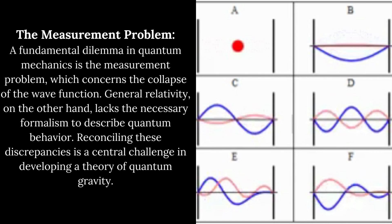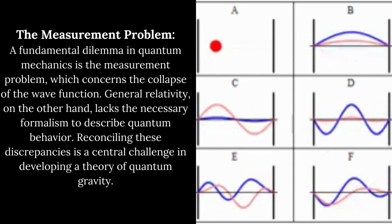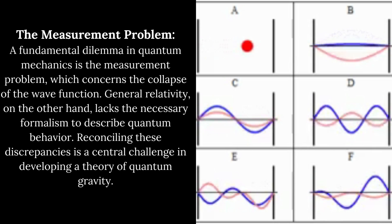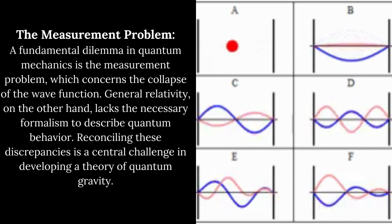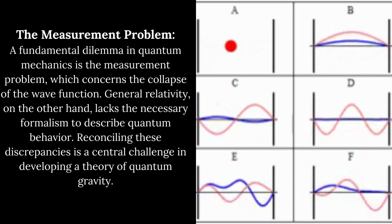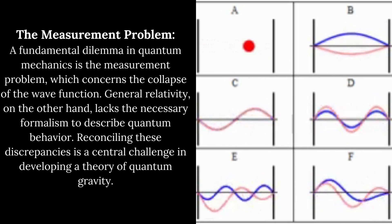General relativity, on the other hand, lacks the necessary formalism to describe quantum behavior. Reconciling these discrepancies is a central challenge in developing a theory of quantum gravity.